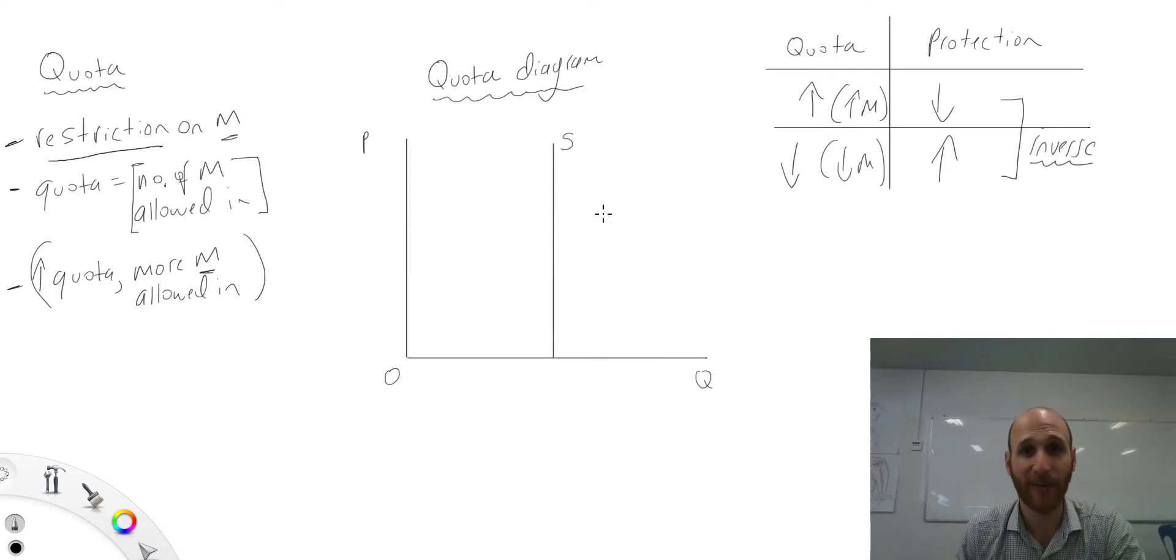So this here is the supply of imports. And then what we'll do is we'll just have our demand curve here, and this is the demand for imported goods.